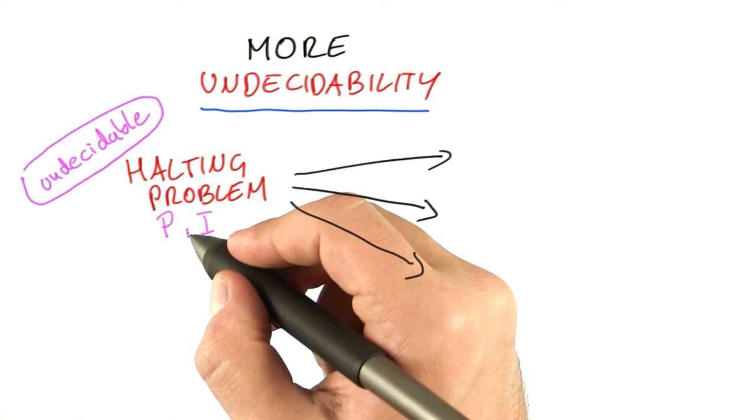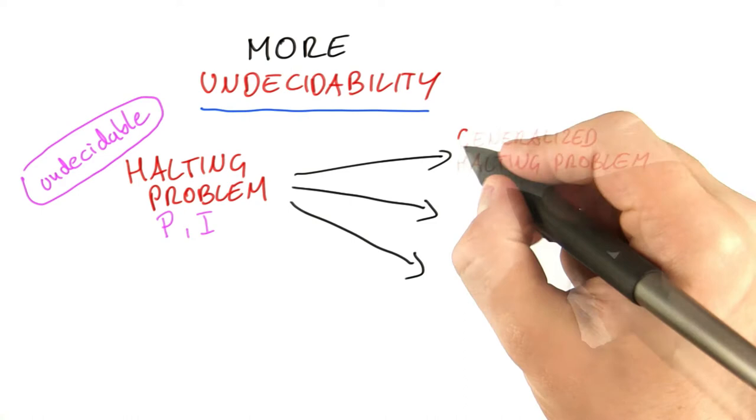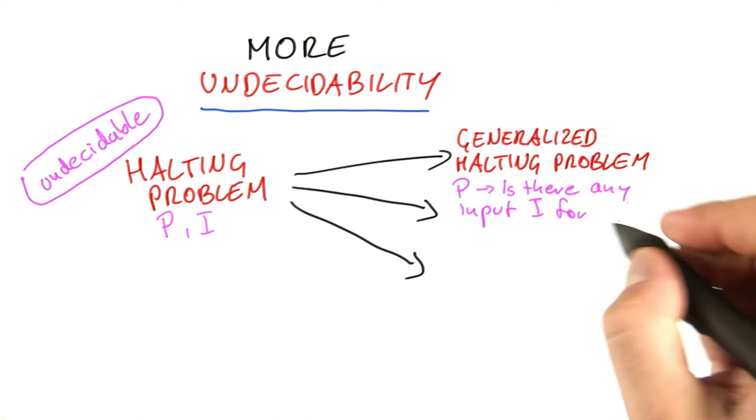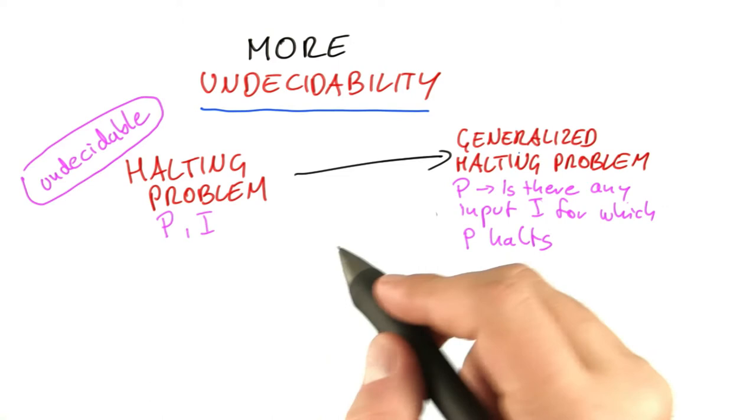And that is, does the program have any input on which it stops? Or does it always go into an infinite loop? And we'll call that the generalized halting problem. So we're given P and our question is, is there any input I for which P halts? And I'll show you now that this problem here is also undecidable.